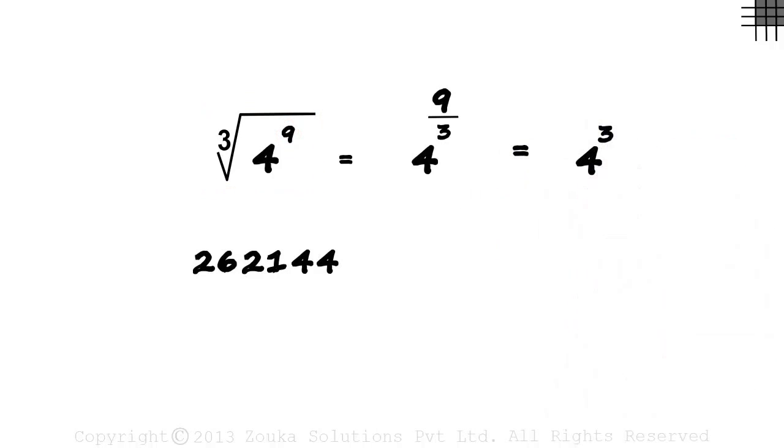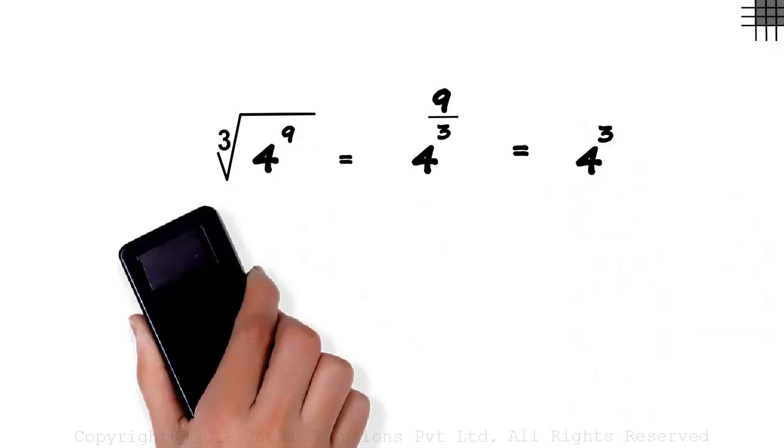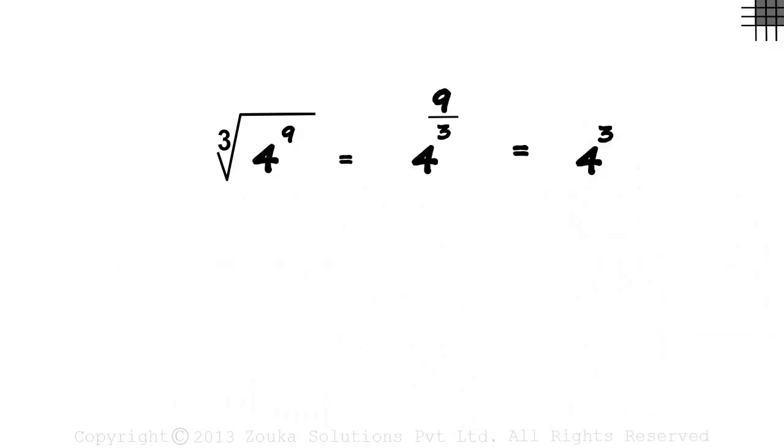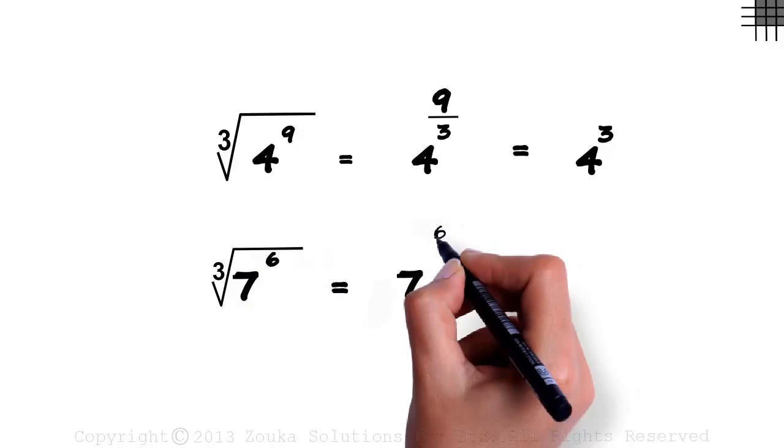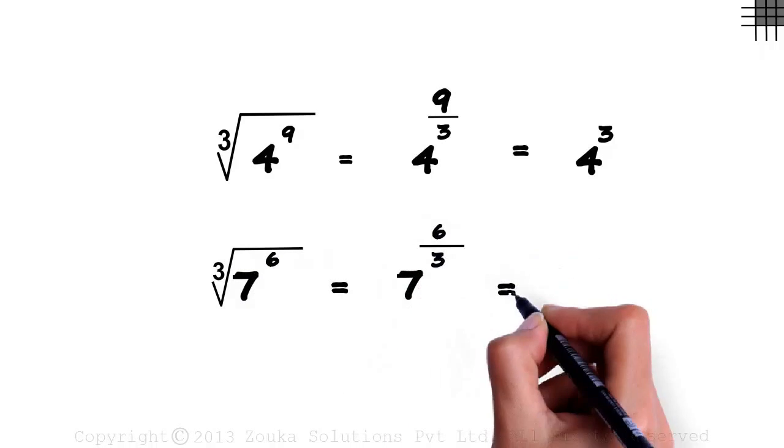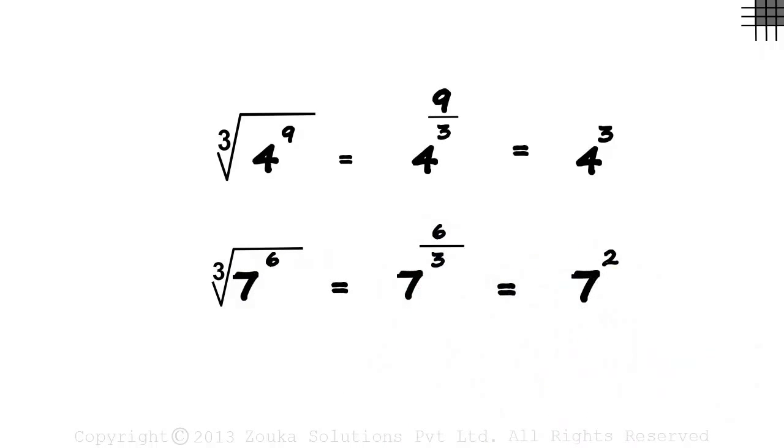Now let's try finding the cube root of 7 raised to 6. We can write it as 7 raised to 6 by 3, which equals 7 raised to 2. So remember: keep the base same and divide the exponent by 3. In the coming videos, we will see how we can calculate the cube root of large numbers which are not in exponential form.